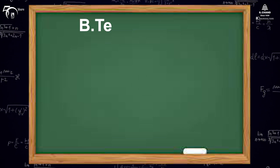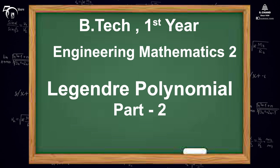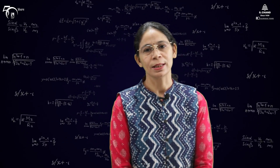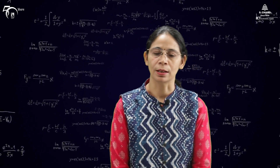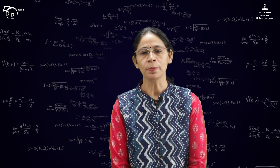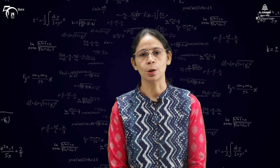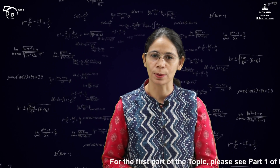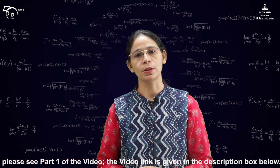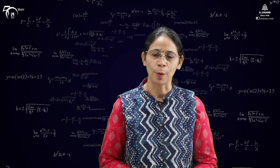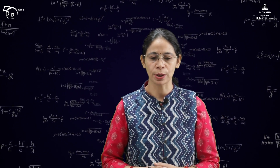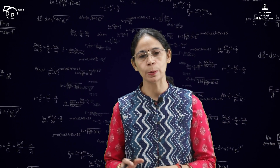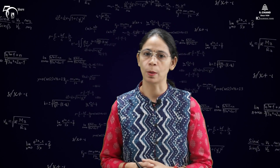The Legendre differential equation is a second order differential equation which was written in the previous part of the video, and the solution needs to be found about x equals to 0. We have checked that x equals to 0 is an ordinary point for this Legendre differential equation, and therefore we were able to assume the series solution in the form y equals to sigma a_n x raised to the power n.